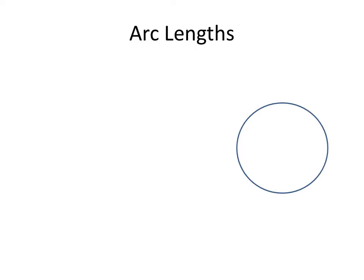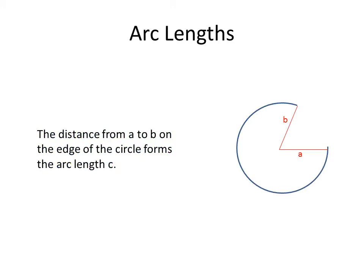Now we're going to talk about arc length. Arc length is a tricky term but it's important to keep in mind. On the right side you see a circle, and we're going to take a chunk out of that circle by taking out a piece of the pie. The distance from A to B on the edge of the circle forms the arc length C. The arc length is the distance on the circumference of the circle from line A to line B.